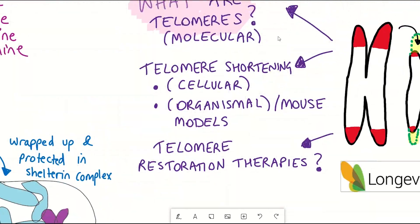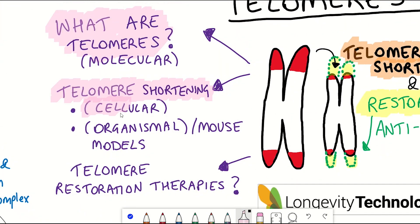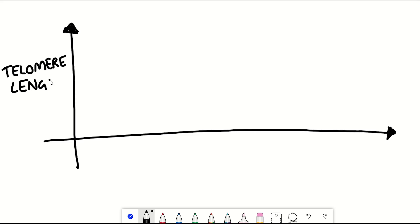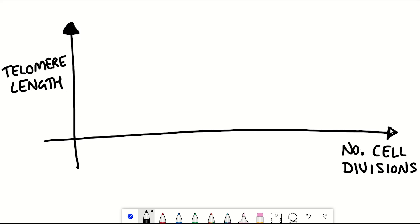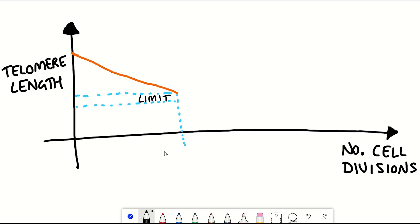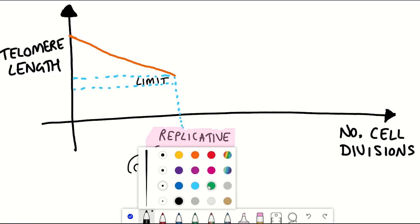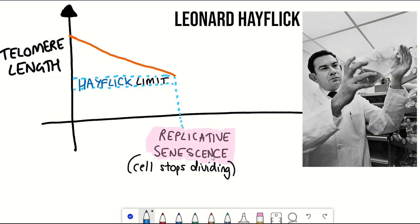This brings us to the cellular level implications of telomere shortening and how it relates to the ageing process. As telomere length decreases with each division in the absence of telomerase activity, the cell stops dividing when length reaches a critical limit and enters so-called replicative senescence — a state where the cell is still active but not dividing. This limit is called the Hayflick limit, after Leonard Hayflick, who noticed that normal human cells stop dividing after replicating around 50 times.